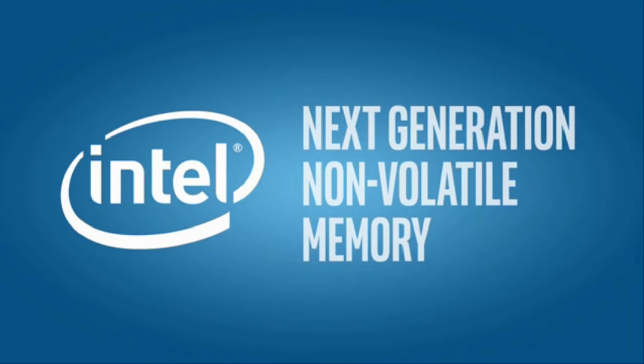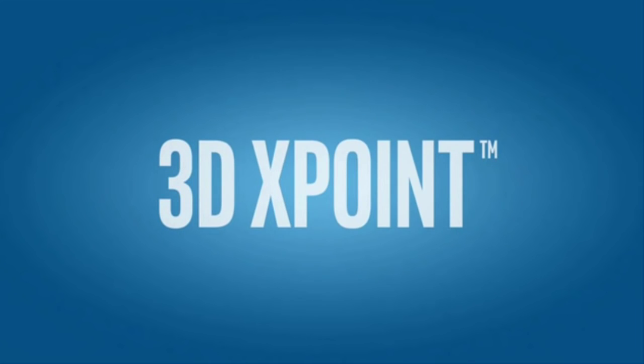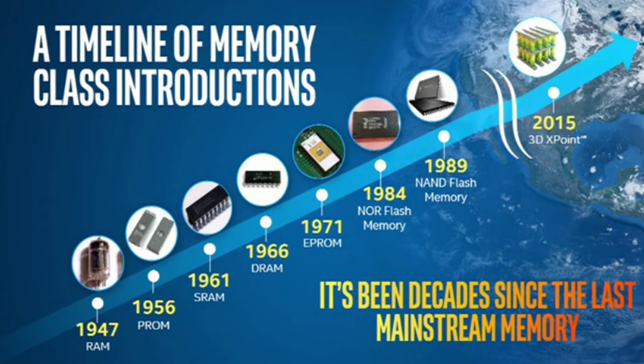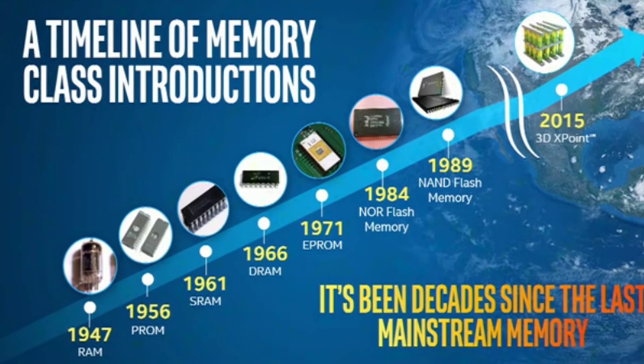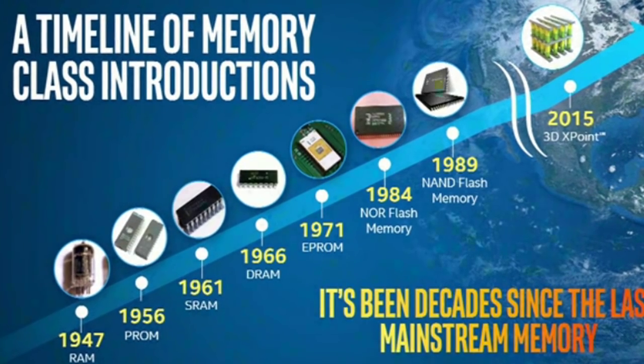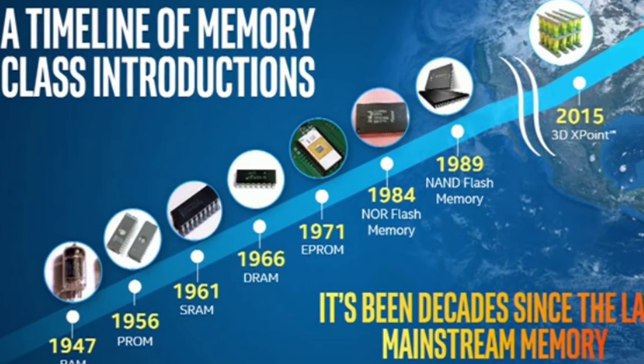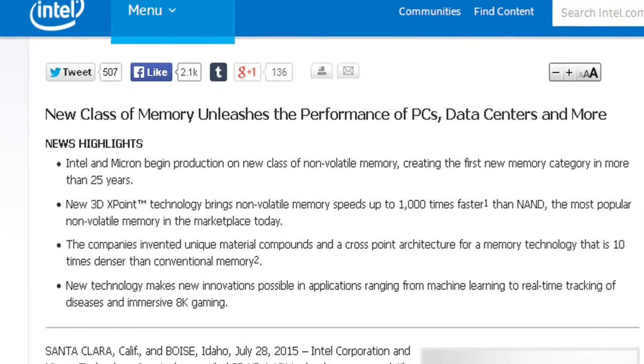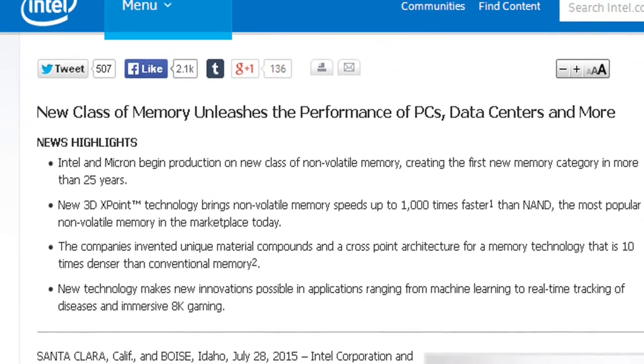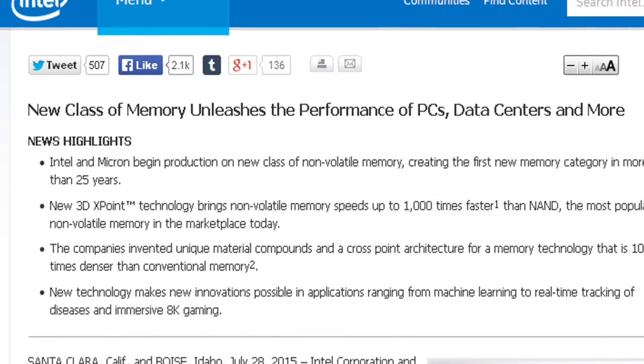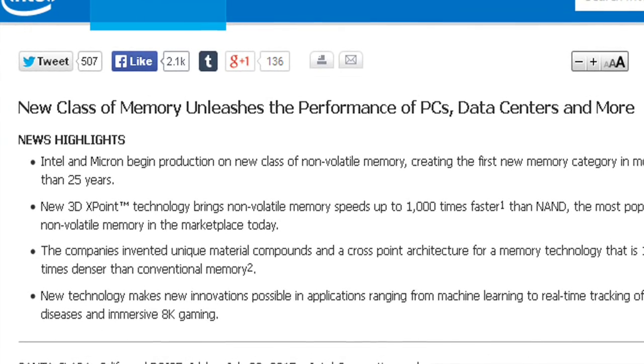Now in production, 3D Crosspoint Technology is a major breakthrough in memory process technology and the first new memory category since the introduction of NAND Flash in 1989. 3D Crosspoint Technology combines the performance, density, power, non-volatility, and cost advantages of all available memory technologies on the market today.